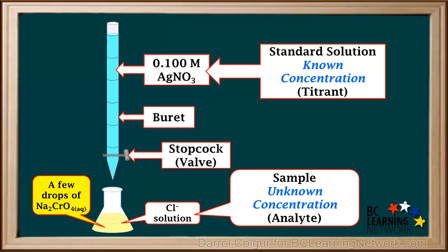In this titration, a few drops of sodium chromate solution are added to the solution. The sodium chromate solution is known as an indicator in this titration. It will change color at what is called the endpoint of the titration. We'll show you how all of this works.